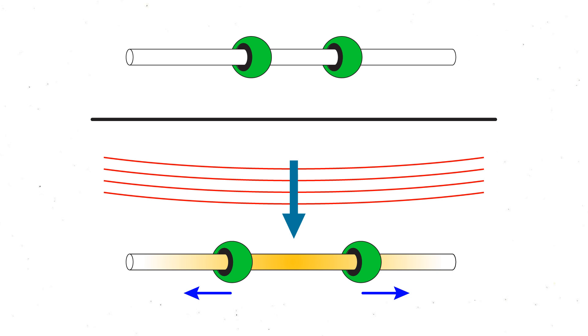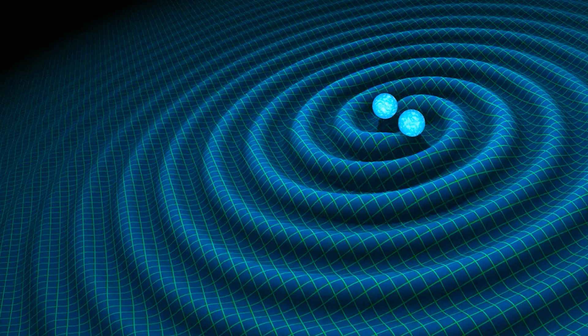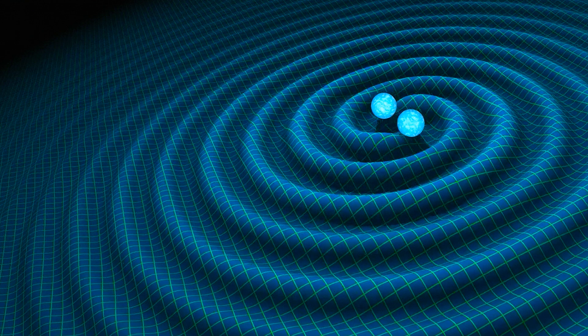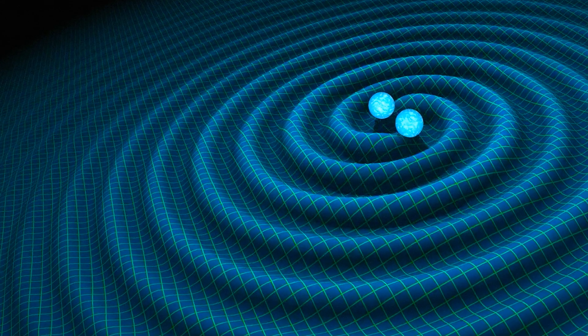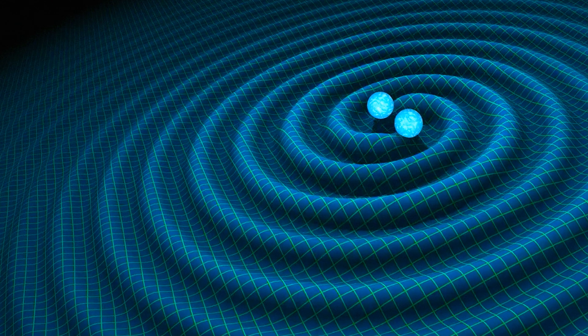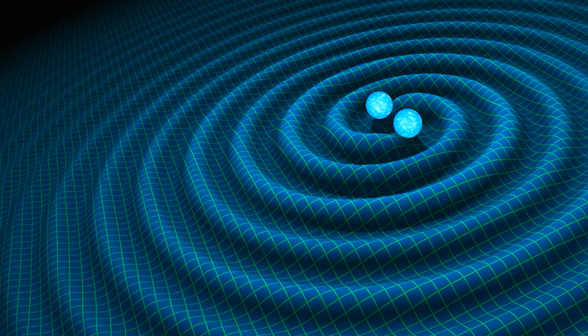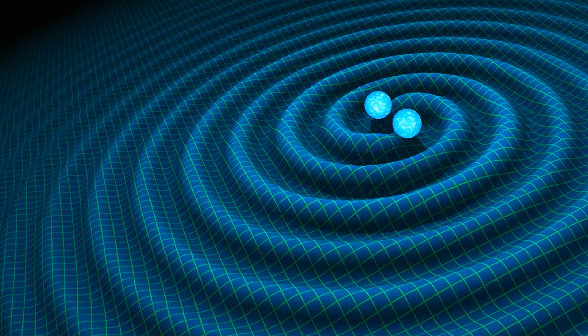Where does this dissipated energy come from? It must come from the energy of the gravitational wave. That means not only that gravitational waves carry energy and have physical effect, but that their energy can be transformed or stolen. And what does this mean for gravitational waves to be able to lose energy, if gravitational waves are the curvature of spacetime by which differences in gravity are transmitted from one point to another?